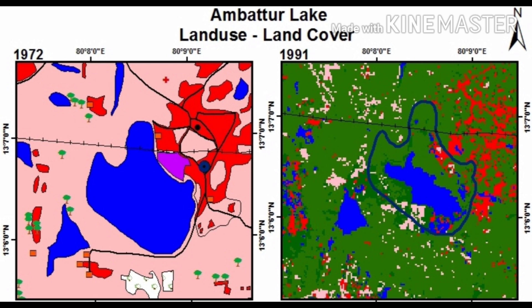The development of the city can be seen on the eastern side, as Chennai lies on the eastern side of Ambatur, slowly expanding its city limits. In the 1991 image, we can clearly see that settlements have been constructed inside the boundary.